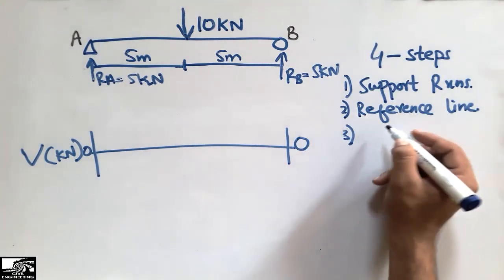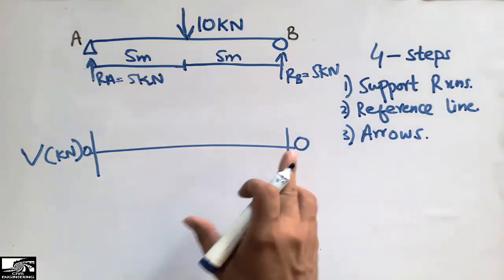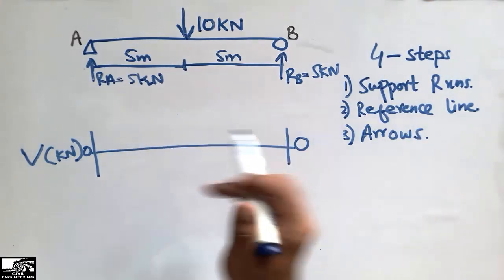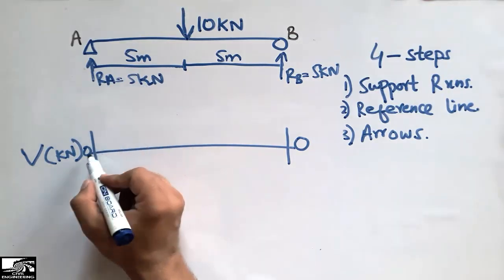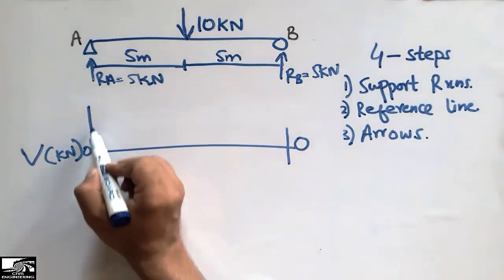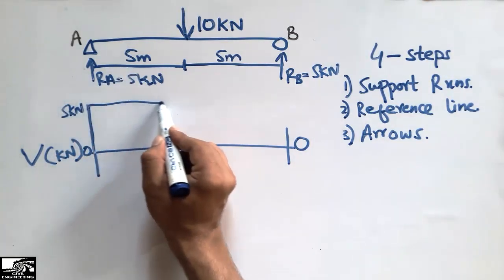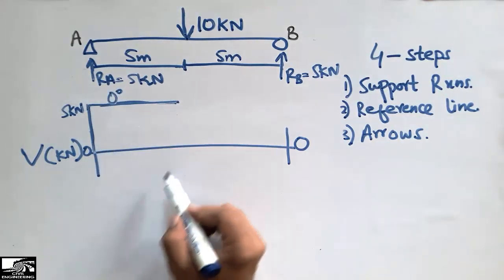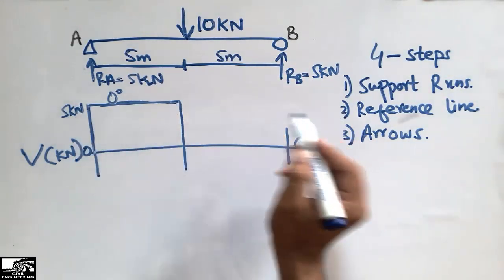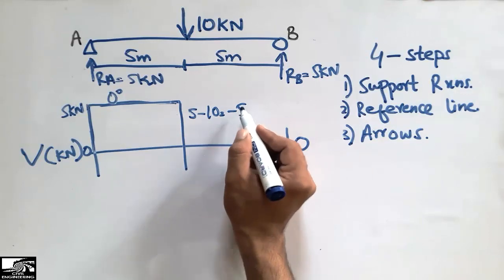The third step is drawing the accurate arrows for the shear force diagram. This is really important. Starting at A, we have 5 kilonewton acting upward, so the arrow goes up to 5 kilonewton. Then there is no load on the beam so it moves straight along the zero-degree line. Then at the 10 kilonewton load, the arrow goes down: 5 minus 10 equals minus 5, so minus 5 kilonewton is acting downward.